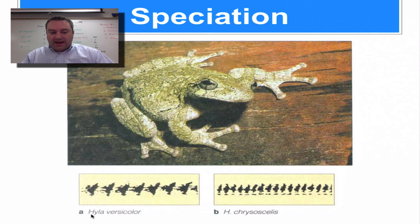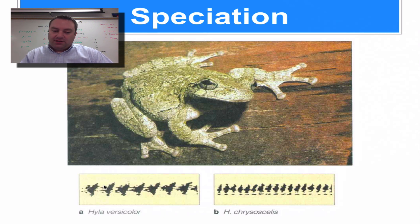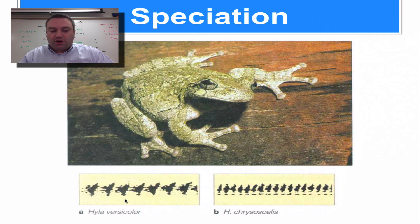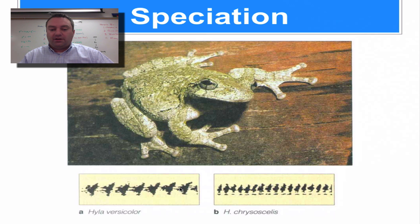These frogs are from the Hyla genus. One species is called Hyla versicolor, and its sister species is Hyla chrysoscelis, and it comes down to their croaks. Hyla versicolor produces a slow, evenly-spaced croak pattern, while Hyla chrysoscelis produces a faster, continuous croaky pattern. If you are a female of one species, you will not be attracted to the other mating call — only to your own species' call. Mating calls are therefore a part of sexual selection and behavioral isolation.